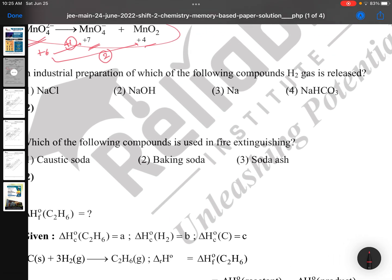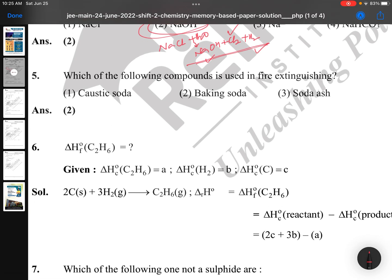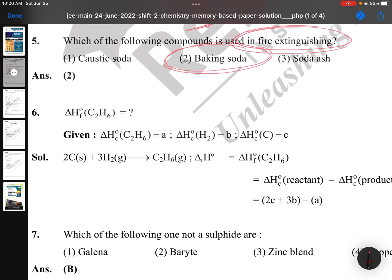In industrial preparation of which of the following compounds is hydrogen gas released? Sodium hydroxide. The preparation method is Nelson's process: sodium chloride plus water gives sodium hydroxide plus chlorine plus hydrogen. Simple question if you're good at s-block elements. Which of the following compounds is used as fire extinguishers? Baking soda, direct option. Again s-block elements, memory-based, and this question is in almost all materials.